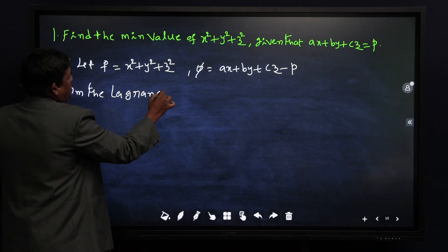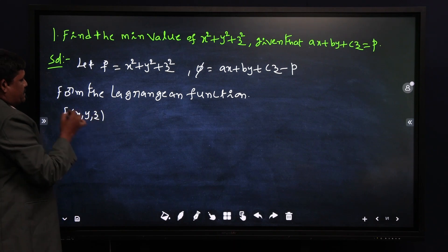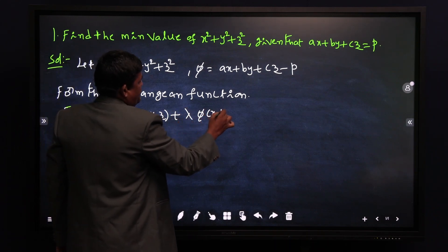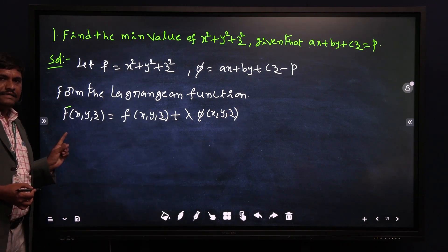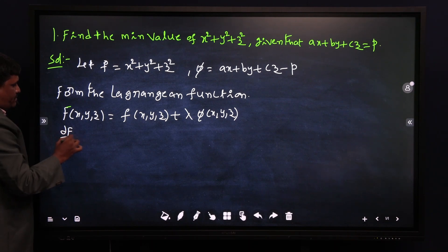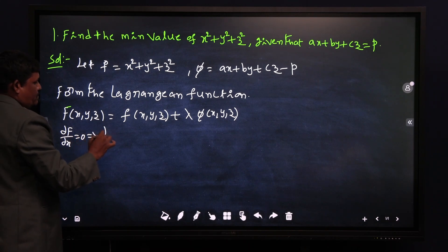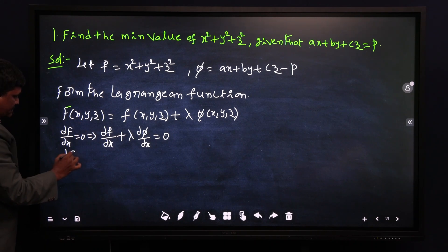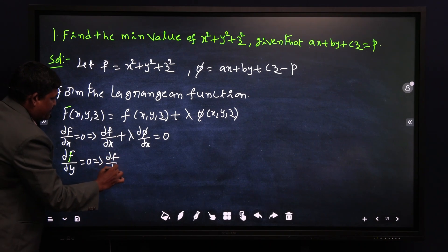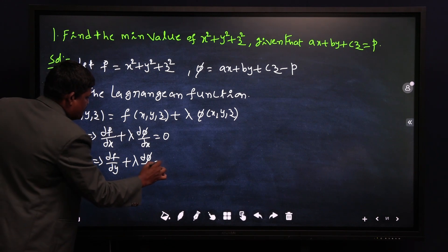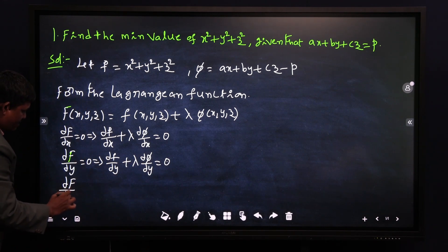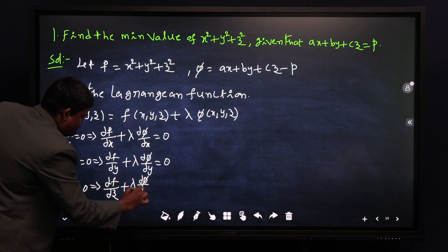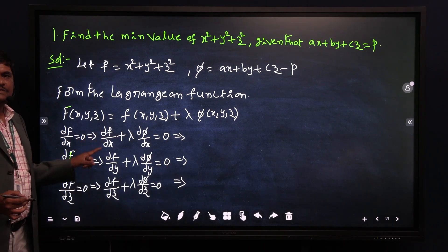Let f = x² + y² + z² and φ = ax + by + cz − p. Form the Lagrangian function: capital F(x, y, z) = small f(x, y, z) + λ·φ(x, y, z). Then take partial derivatives of capital F with respect to x, y, and z, each set equal to zero, converting each into small f and φ components.